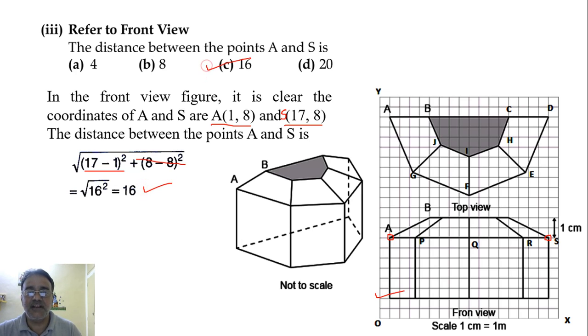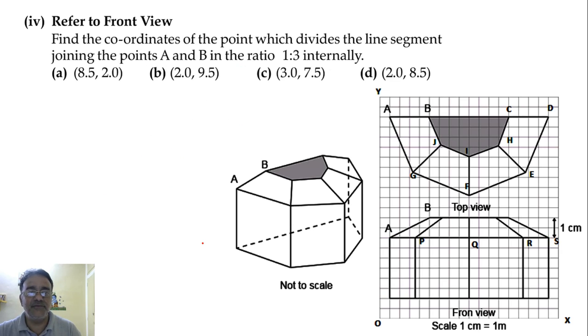So the correct option, the correct answer is the third one, option C. Now we will move towards the fourth question. Refer to front view. Find the coordinates of the point which divides the line segment joining the points A and B in the ratio 1:3 internally. So the coordinate of A we already got: (1, 8). And the coordinate of B we need to find. So after 8 comes 9, 10 - the y-coordinate is 10, and x-coordinate is 3, 4, 5 - so (5, 10).